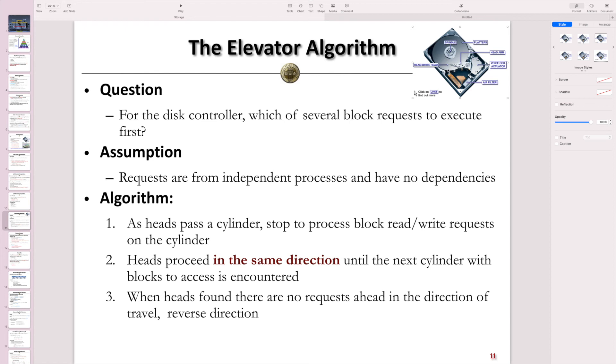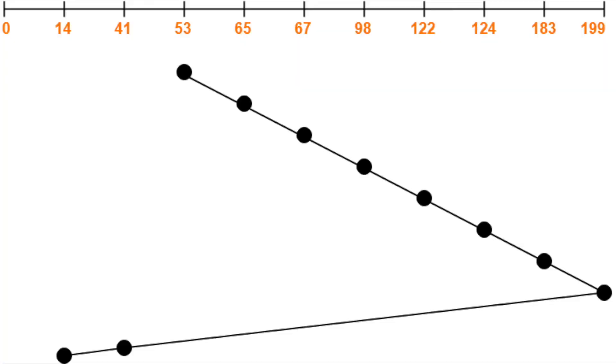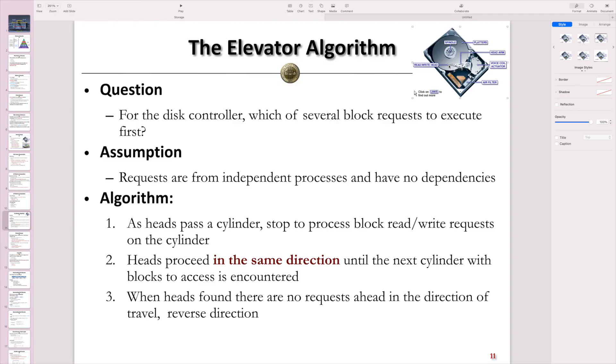Therefore, the order for executing different requests really depends on the arm movement and the cylinder locations we want to read for these requests. If the request of the block is on the current cylinder of the arm, then we will be able to read the data directly. Then the next one to be executed will be the blocks in the same direction of this arm movement. And the requests in the reverse direction of the arm movement will be executed at last.